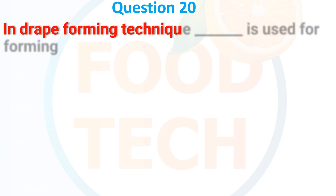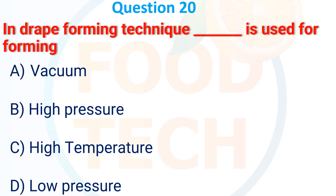In draft forming technique, dash is used for forming. (a) Vacuum, (b) Pressure, (c) High temperature, (d) Low pressure. The answer is (a) Vacuum.